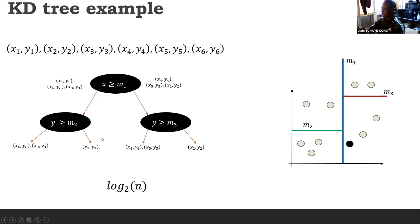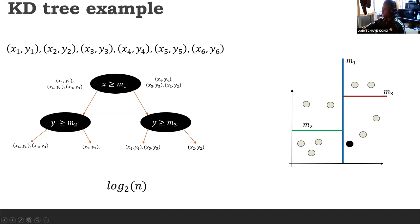During query, if we want to query a new data point, we will take the data point and compare each attribute until we reach a sub-region that will hopefully contain our potential nearest neighbor. We have to note that this technique is not perfect because we can easily miss the real nearest neighbor — it is not guaranteed that the region we land in will contain the true nearest neighbor. The tree depth will never exceed log base 2 of N, which helps to reduce the complexity from linear to logarithmic.